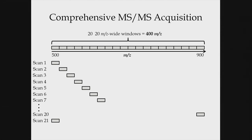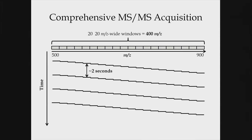On something like a Q Exactive or most modern instruments, you can do this at a scan rate of about 10 Hz, which means we sample a given window every two seconds. That's an important aspect of DIA: we're going to be extracting chromatograms from the data, so the same cycle time considerations that apply to PRM also apply to DIA.